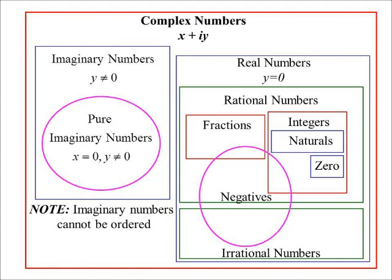You can't say 3i is bigger than 2i, because if I ask which is bigger — 2 + 3i or 3 + 2i — is the real part more important than the imaginary part? You can't decide. In order to order a number you have to be able to place it on the number line, and our number line is the real number line, so only real numbers can be ordered.